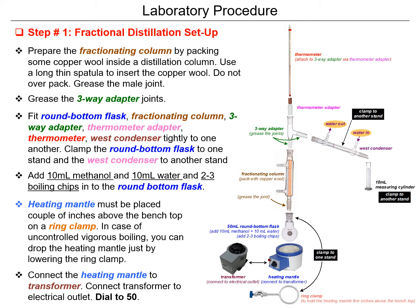Before you start the experiment, take the mixture of samples — you should do this before you completely assemble the setup. For this experiment, you will take 10 mL of methanol and 10 mL of water, and two to three boiling chips, into the round bottom flask. Then connect all parts of the setup as explained, and connect the socket of the heating mantle to the transformer. Then you can start the experiment.